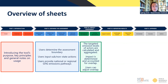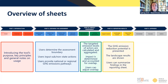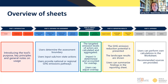The green sheets — impact assessment — perform the calculation. The targeted emissions levels of actors are calculated and aggregated, impact is determined, and an overlap analysis is done, which users can adjust. In the fourth part, reporting results, the greenhouse gas emission reduction potential is presented, landscape results are shown, and users can summarize findings in the reporting sheet. In the final part, users can perform free calculations in the worksheets, and some recommended sources are provided. The admin sheets contain unit conversion tables used throughout the tool.